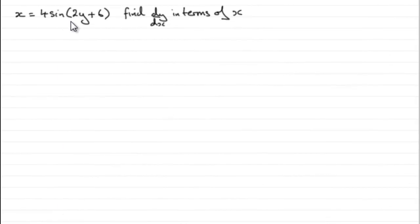Now we're given that x equals 4 sine of 2y plus 6 and asked to find dy by dx in terms of x. So how would I do this? Well this is different to what we normally expect. Normally we have a y here and we have x's on this side, so it's very easy to find dy by dx.